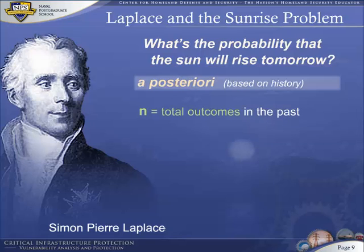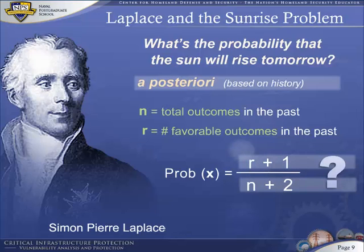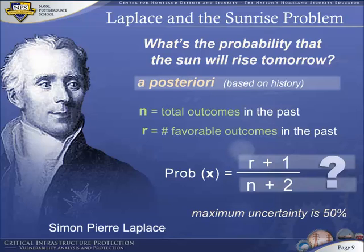Let n be the number of times all events — both sun rises and not — have already happened, and r be the number of times in the past that the favorable event, sun rises, has happened. Then the a posteriori probability is r plus 1 divided by n plus 2. Laplace argued that the likelihood of a future event occurring when it has never happened before should be 50-50 — equally likely. That is, if r and n both equal 0, then the probability should be 1/2, or 50%. Maximum uncertainty is 50%, because when we know nothing at all about the past, everything is equally likely to happen.